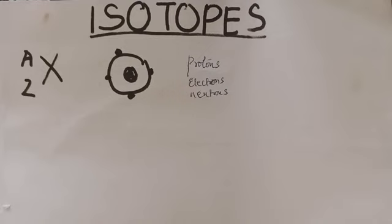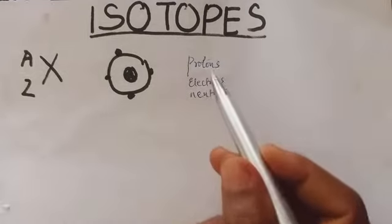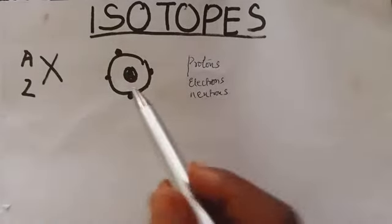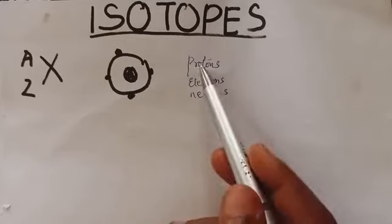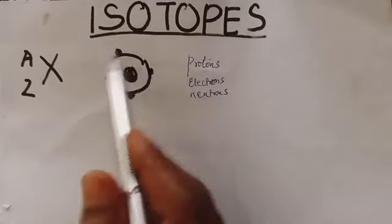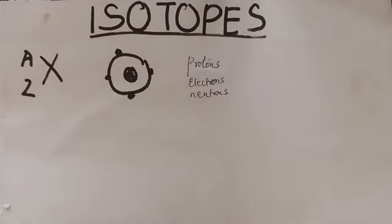What are isotopes? Well, before we go into that, in our previous class — please, if you have not gone through that course on atomic structure, try to go through it. We looked at the structure of the atom and we said the atom has three main subparticles: the protons, the electrons, and the neutrons. These particles are arranged so that the protons and the neutrons reside in the nucleus, while electrons revolve around in circular orbits.